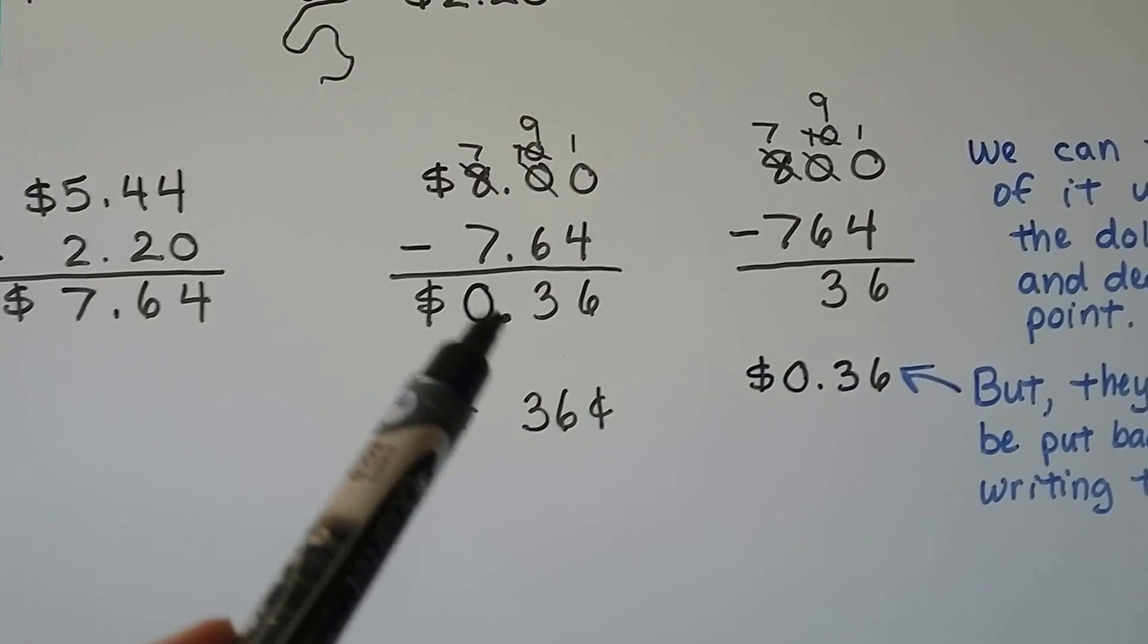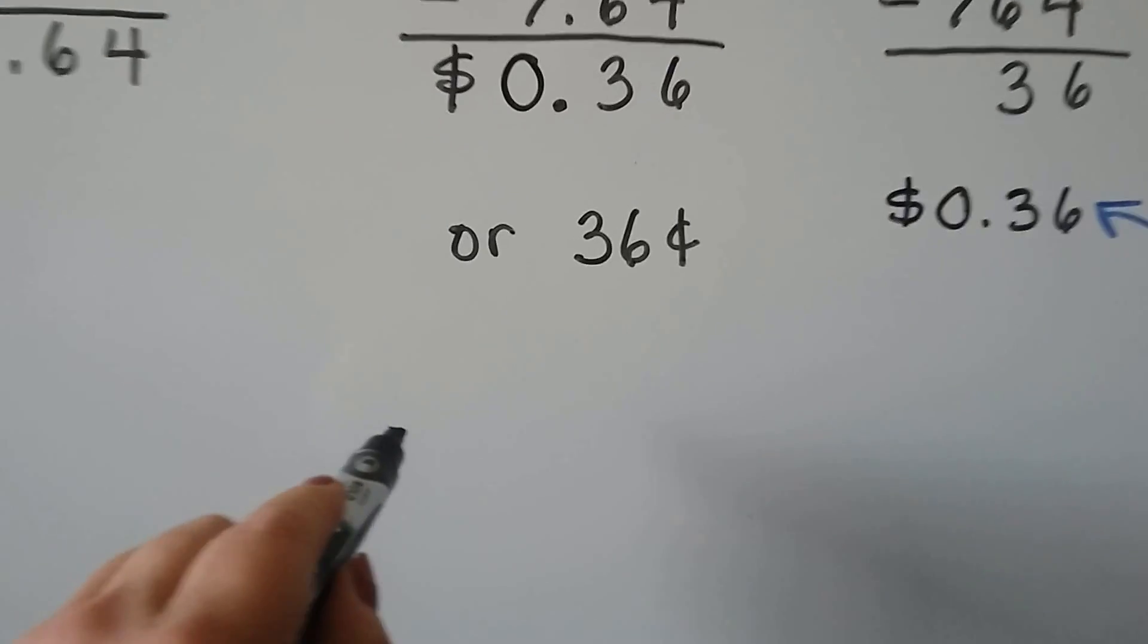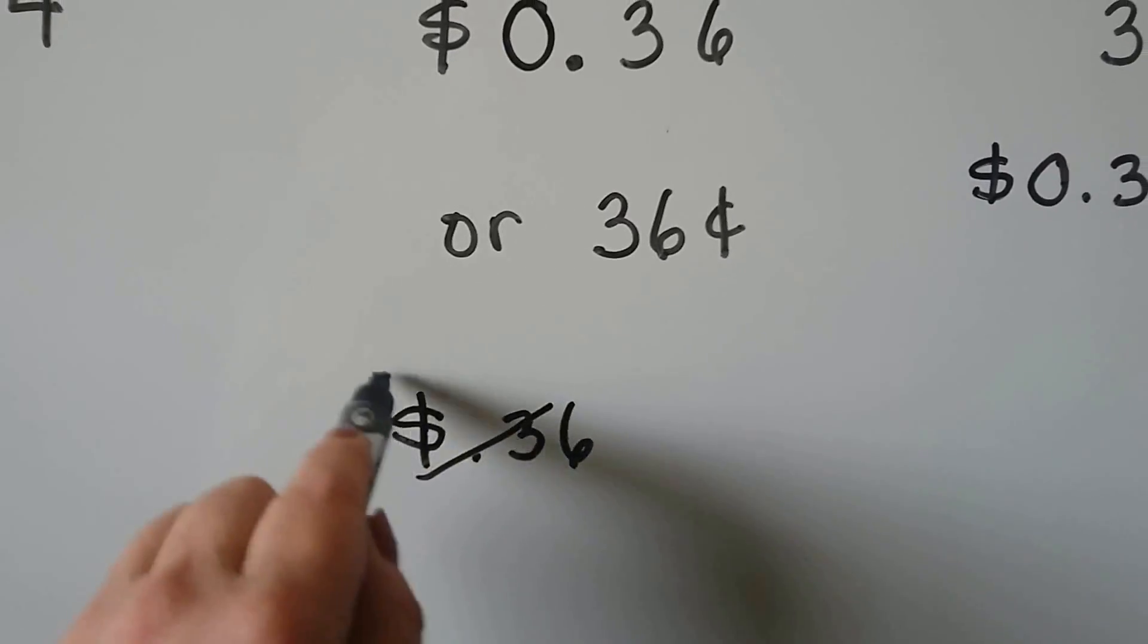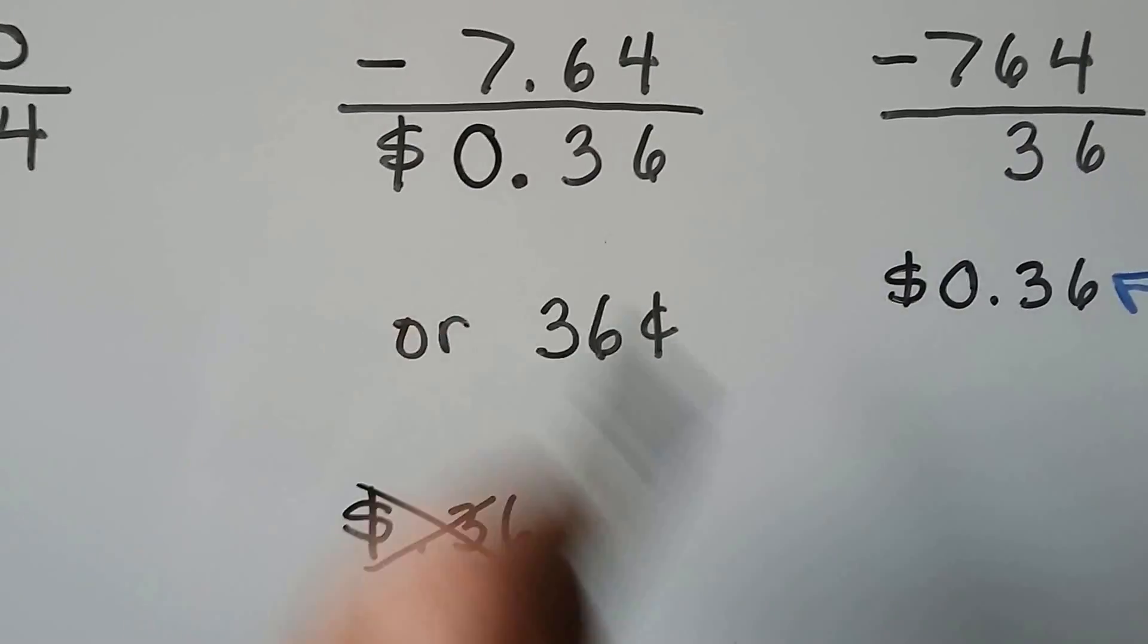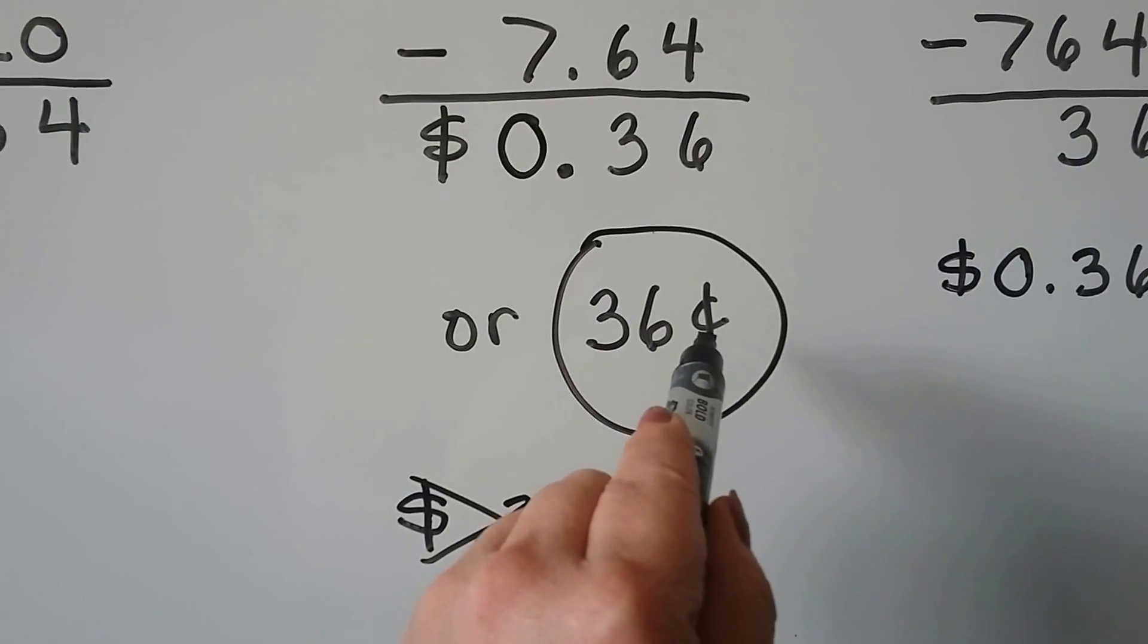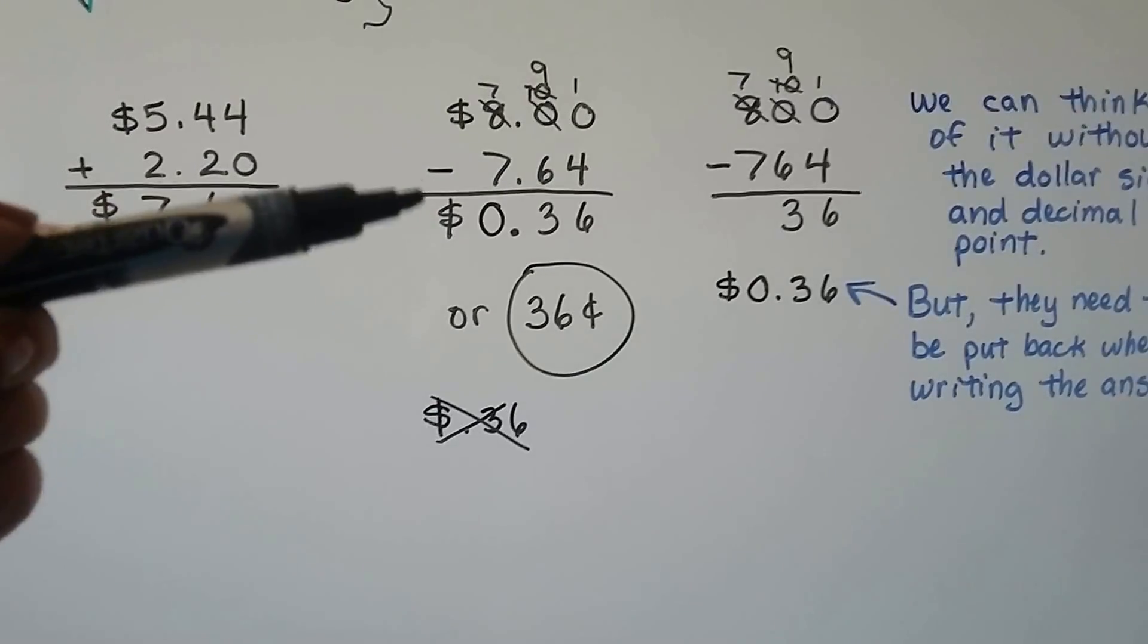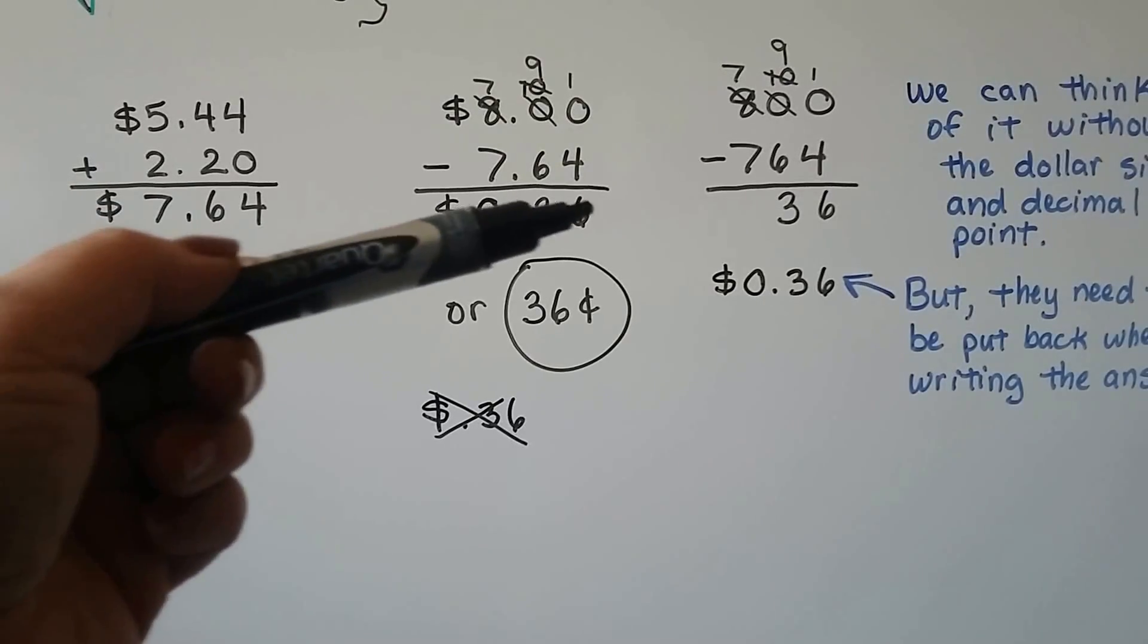And do you see how we have the 0 here and then the dollar sign? You would not write this as $0.36. We don't do that. You would put a 0 there, then the decimal point, or you would just write 36 with the cent symbol. But if you're doing addition or subtraction in columns like this, you should write it with the dollar sign and then a 0, the decimal point, and then the 36.